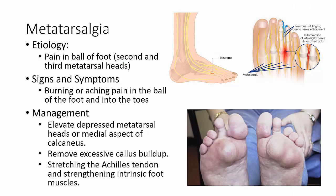Metatarsalgia is pain in the ball of the foot, typically between the second and third metatarsal heads. It restricts the extensibility of the gastrocnemius and soleus complex and is emphasized during the toe-off phase of gait. There is typically a fallen metatarsal arch associated with this condition. Signs and symptoms include a flattened transverse arch, depression of the second, third, or fourth metatarsal bones, and resulting pain. A pes cavus foot may also cause problems.